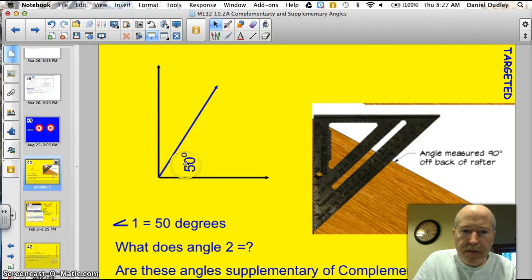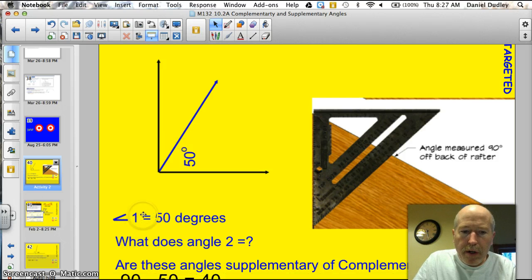Does that make it easier? This is 50 degrees. What is that angle going to be? Well, here's what we know. We know that angle number 1, that's this one, is 50 degrees. So what is angle number 2?